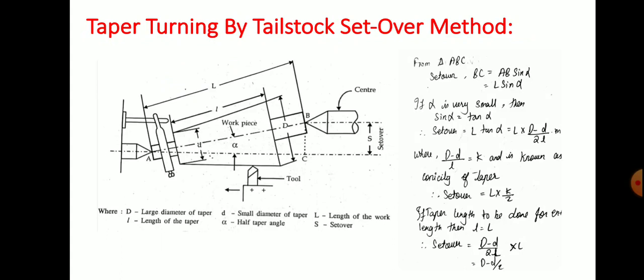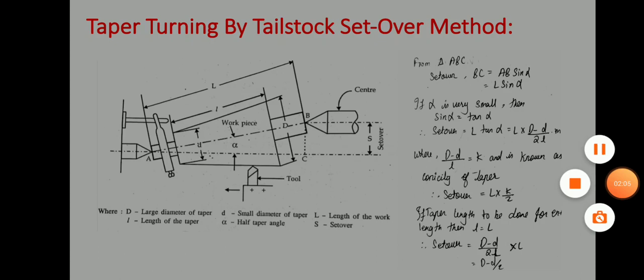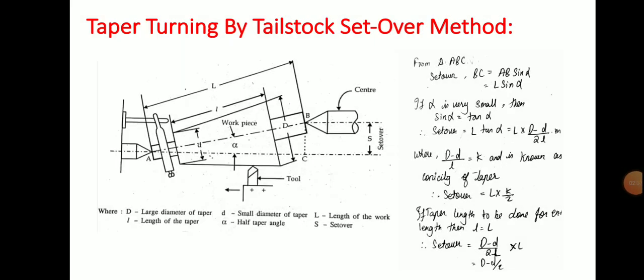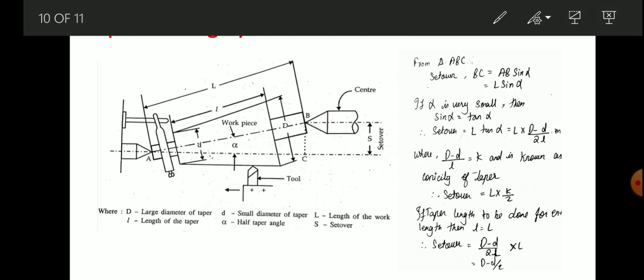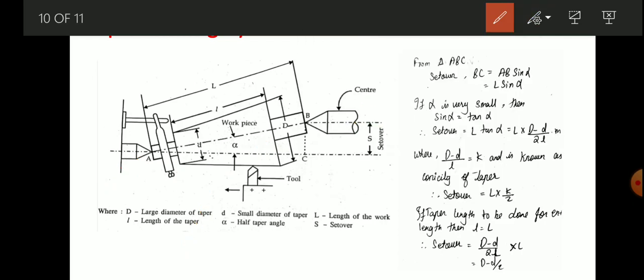Now let us go to taper turning by tailstock set-over method. Here we can see a simple sketch of taper turning by the tailstock set-over method. It consists of a cylindrical workpiece which is supported by the headstock and a tailstock.